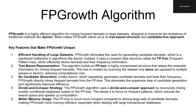Here are some key features that make FP Growth unique. The first is efficient handling of large datasets — it eliminates the need for generating candidate item sets, which is a significant bottleneck in algorithms like Apriori. Instead, it uses a compact data structure called the FP tree, which efficiently stores item sets and frequency information.